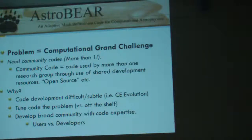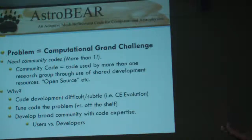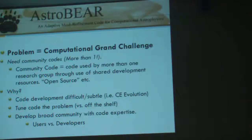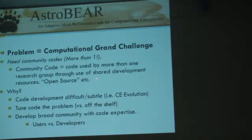The problem we're trying to take on is really what we call in computational physics a grand challenge problem. Grand challenge problems should not be done by isolated groups that don't talk to each other. Computational physics has moved in the direction of community codes — a code that's used by more than one research group, often with shared development resources, and in some sense open source.